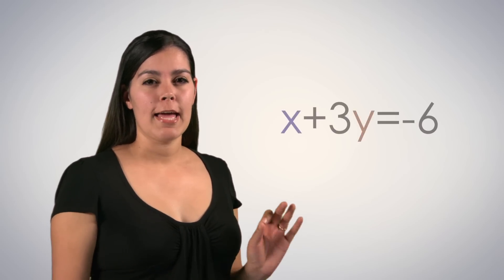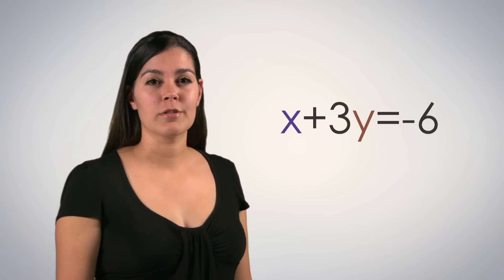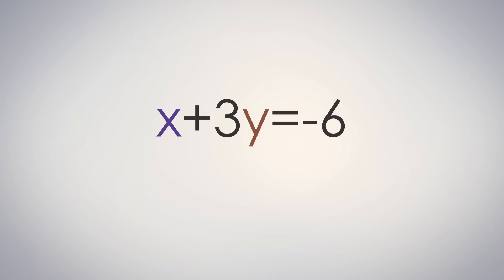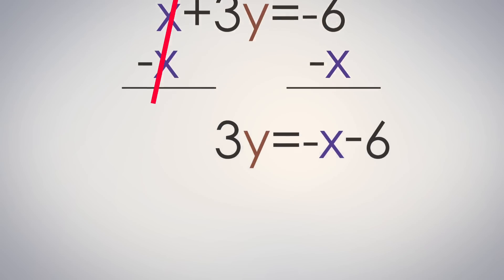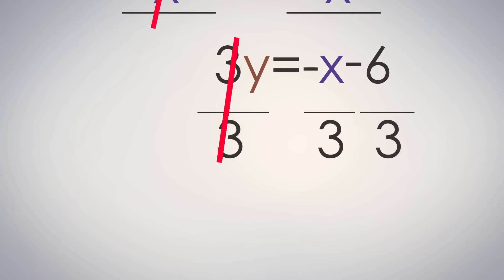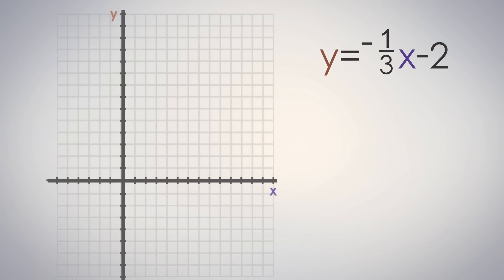This time, let's make things a little more challenging. How about x plus 3y equals negative 6? Let's subtract x from both sides to isolate y. That gives us 3y equals negative x minus 6. And because we want the function to tell us what 1y equals, we'll need to divide both sides by 3. So y equals negative 1 third x minus 2. Here the slope is negative 1 third, and the y-intercept is 0, negative 2.